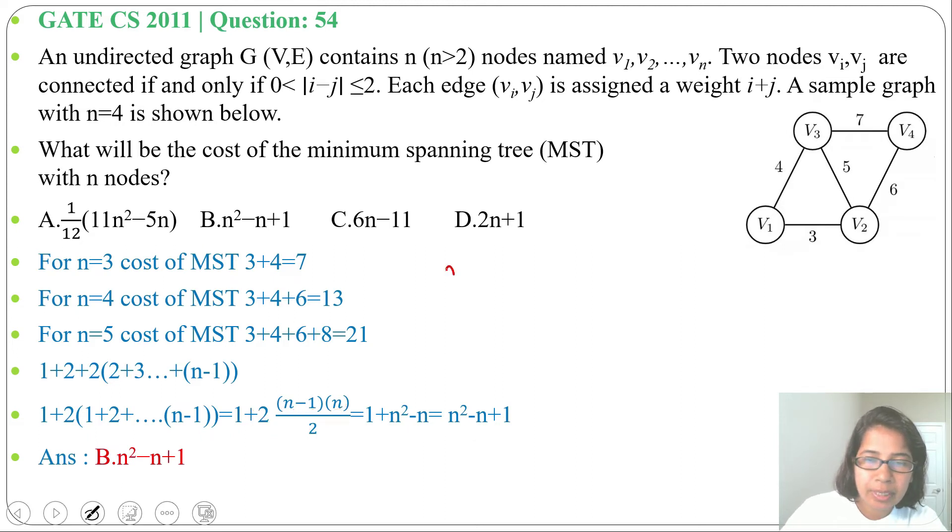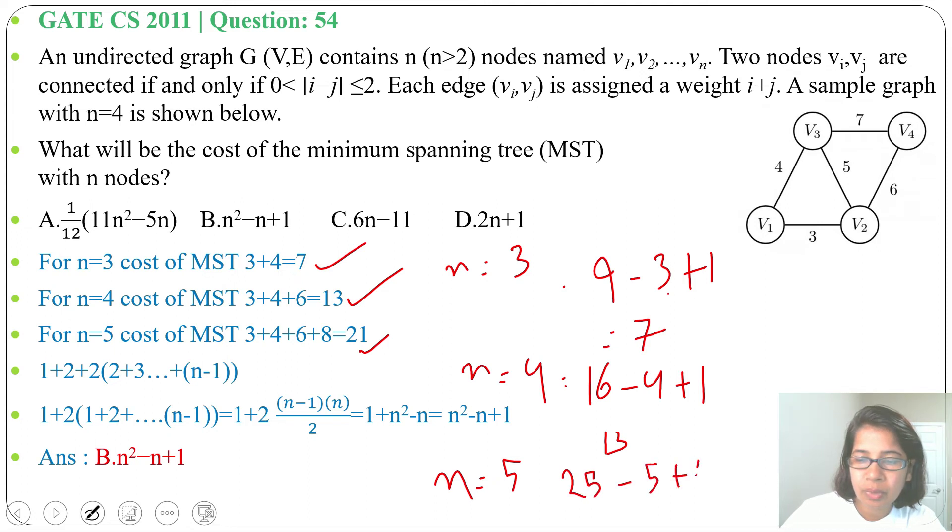Let me check for n=3: 3²=9, 9-3+1=7, yes. For n=4: 4²=16, 16-4+1=13. For n=4 also it is correct. n=5: 5²=25, 25-5+1=21.